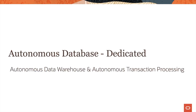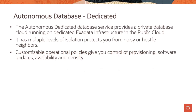Let's quickly look at the autonomous database dedicated service offering in Oracle Cloud Infrastructure. The autonomous dedicated database service provides a private database cloud running on dedicated Exadata infrastructure in the public cloud. It has multiple levels of isolation, which protects you from noisy or hostile neighbors. Customizable operational policies give you control over provisioning, software updates, availability, and density.